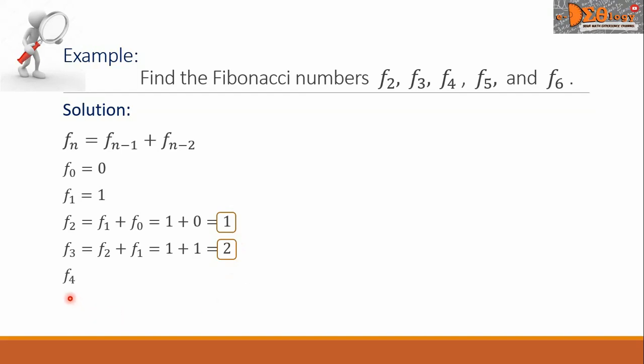F sub 4 equals F sub 3 plus F sub 2. F sub 3 is 2 plus F sub 2 is 1. So the sum is equal to 3. This is our F sub 4.